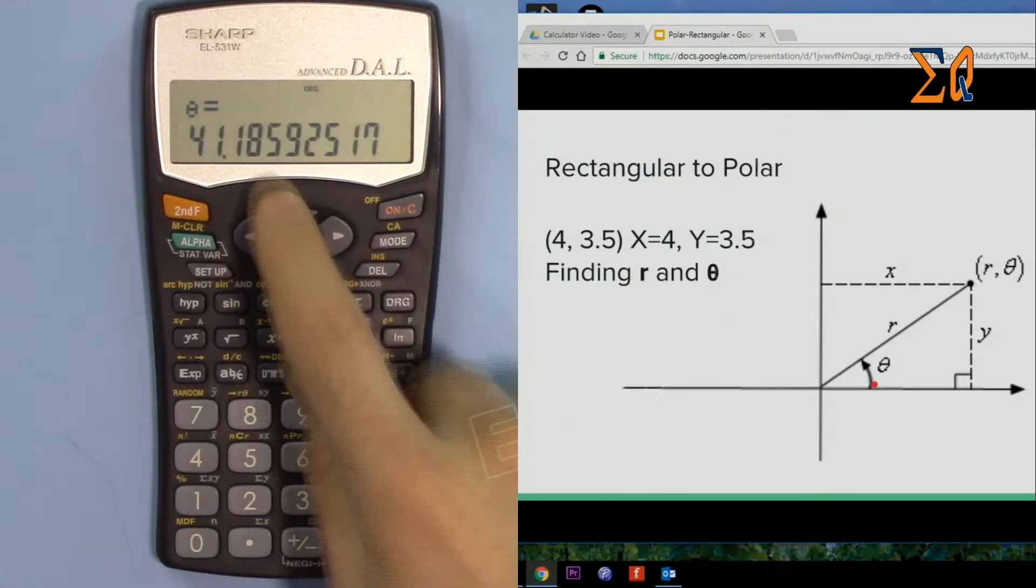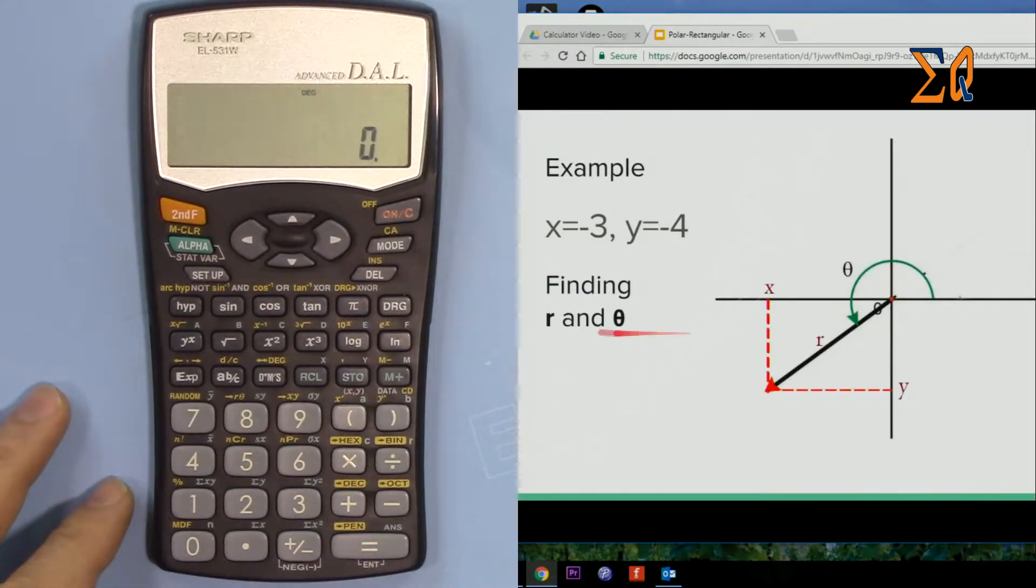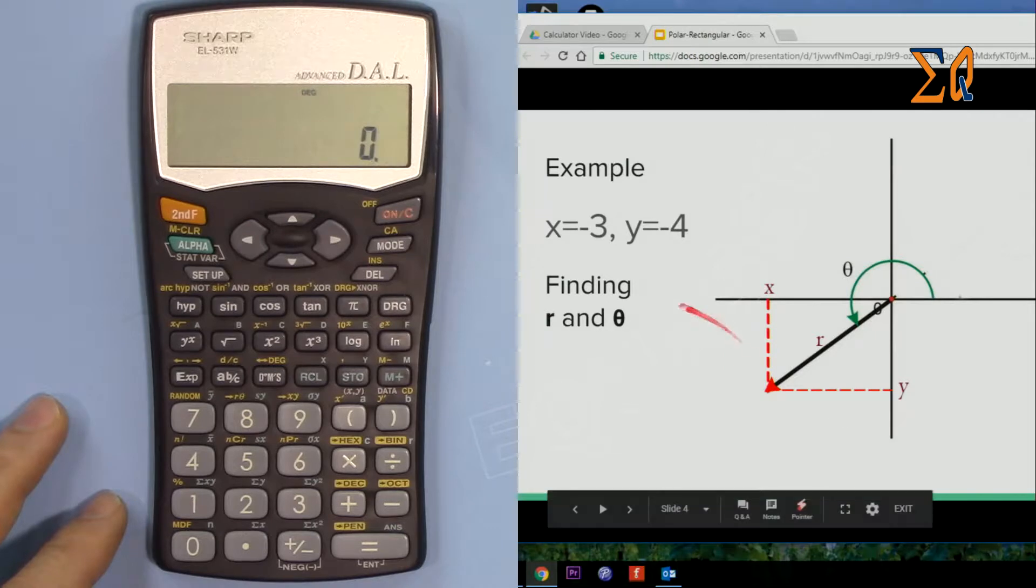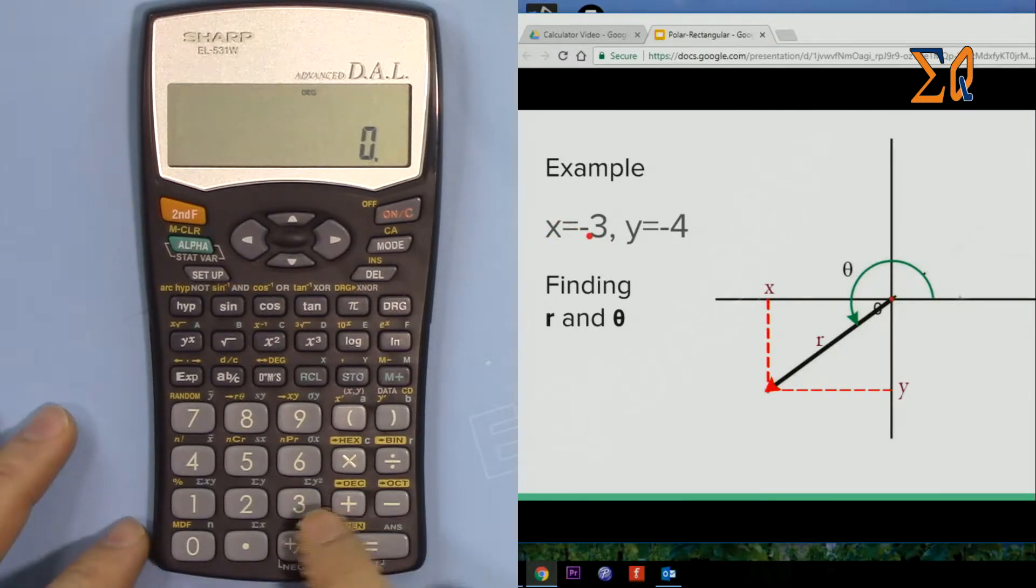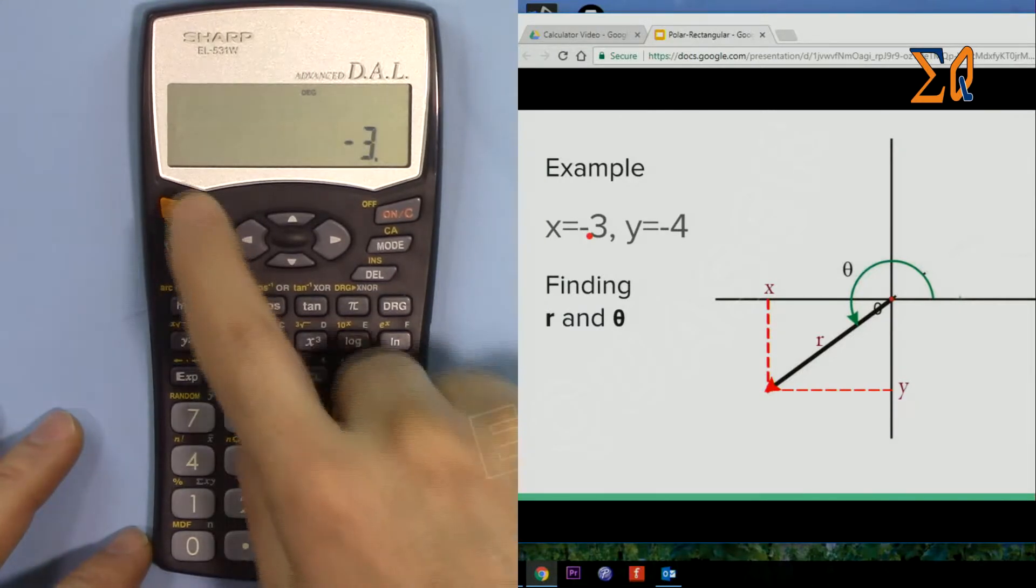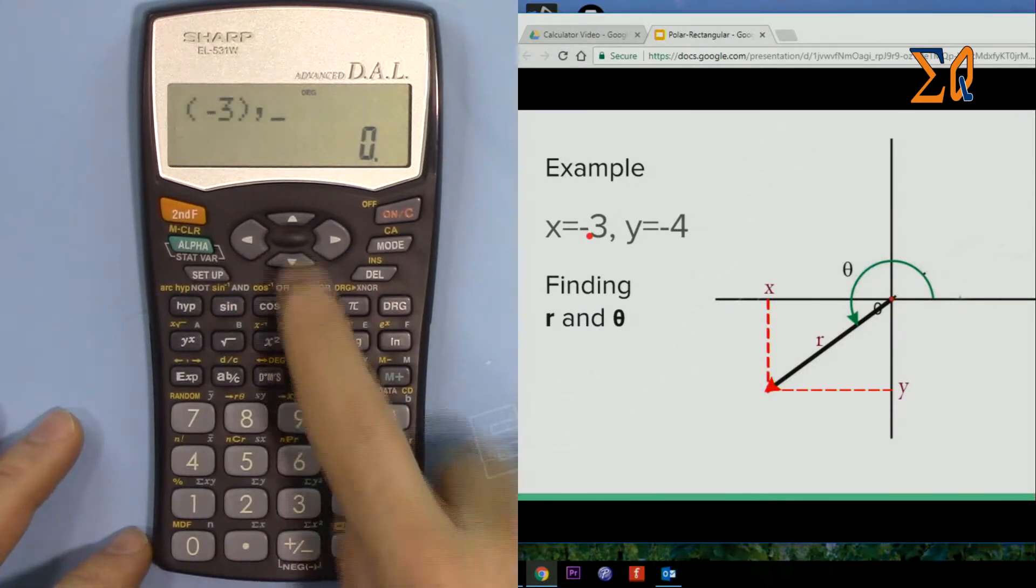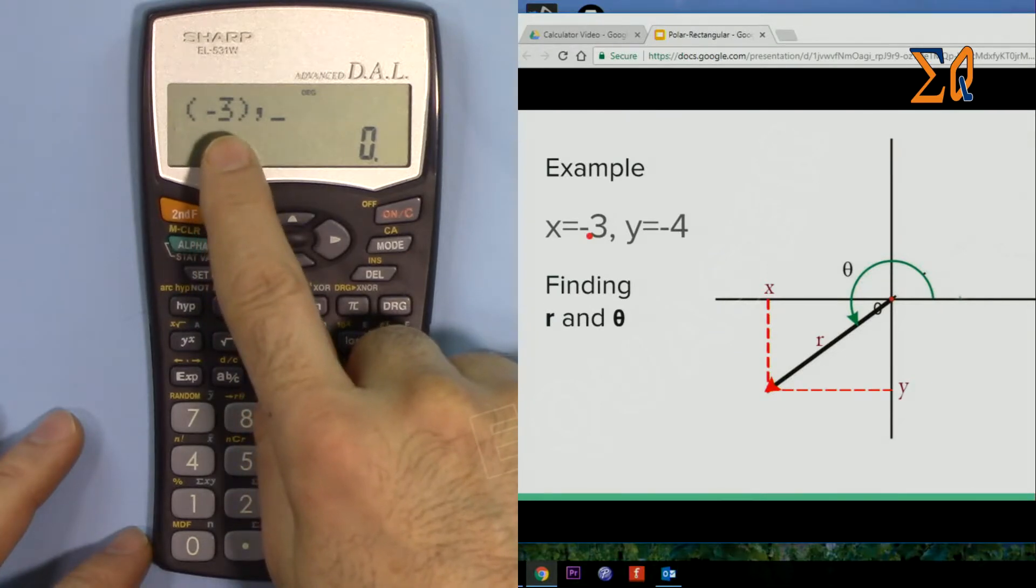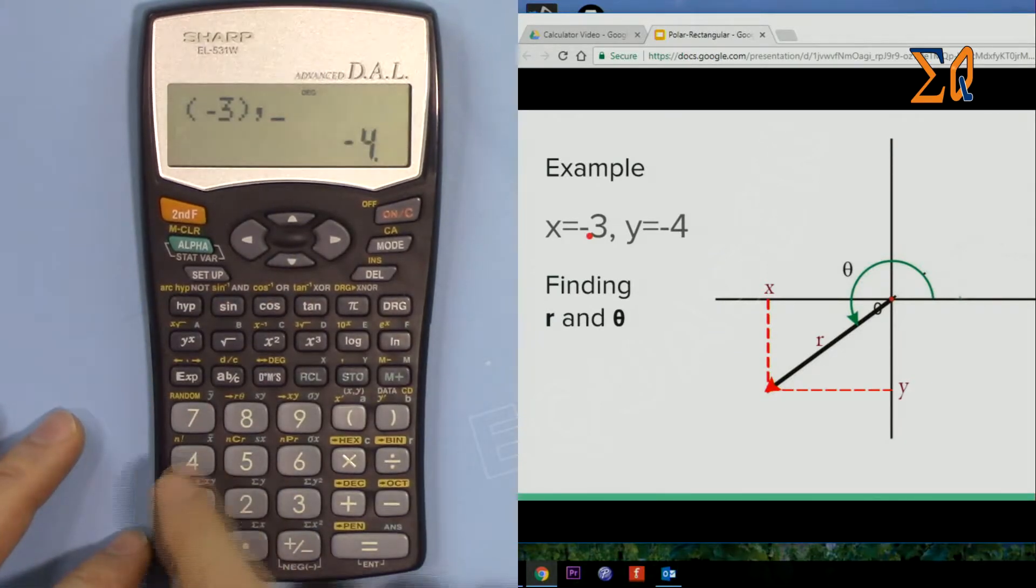So now in this case, we want to find out the angles. X is minus 3. For minus, I'm pressing this one. So minus 3, second function, comma—you see it puts the parenthesis automatically—and then minus 4.